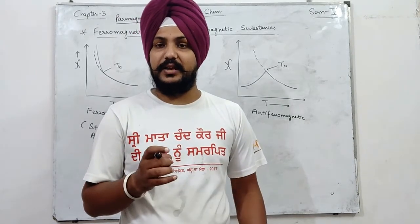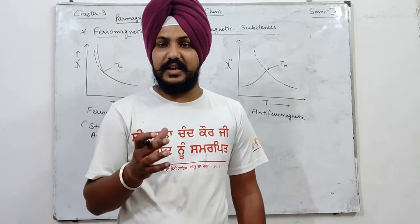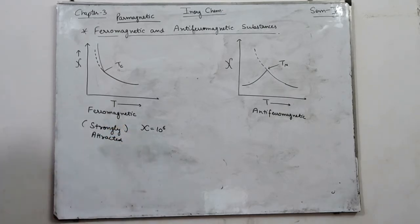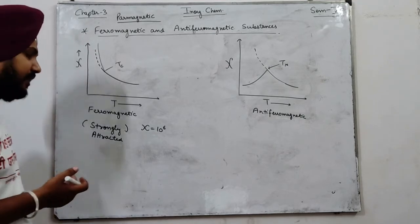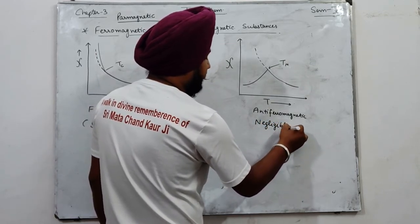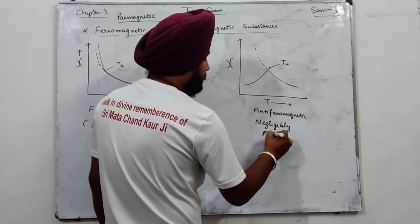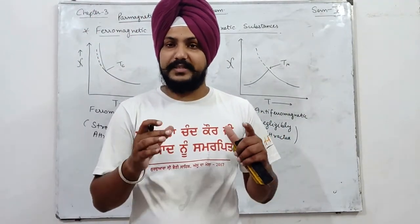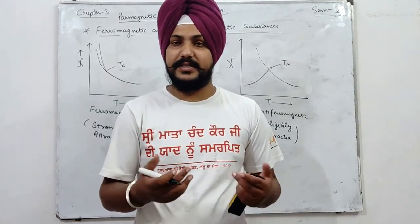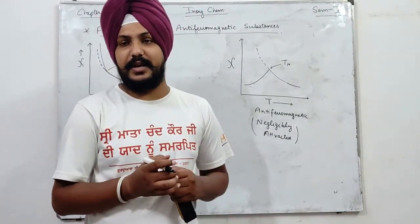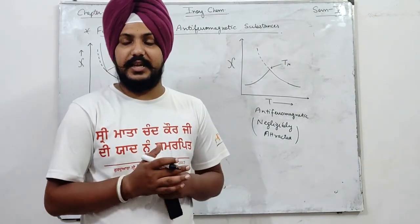Paramagnetic substances weakly attracted थे, लेकिन ferromagnetic substances strongly attraction show करते हैं external magnetic field के साथ। इसके मुकाबले में anti-ferromagnetic substances negligibly attracted होती हैं magnetic field में। जब इनको external magnetic field में place करते हैं तो यह negligible attraction show करती हैं। इसका reason भी हम आगे बताएंगे।